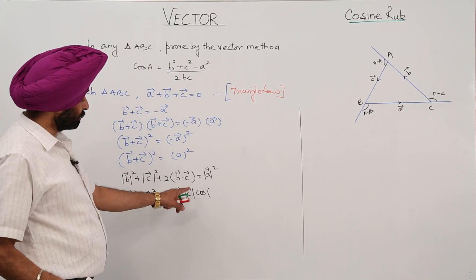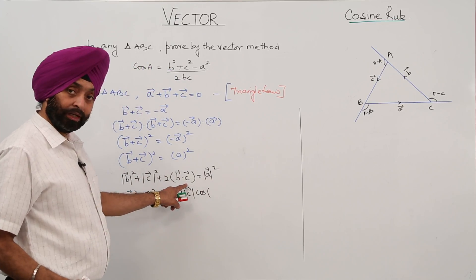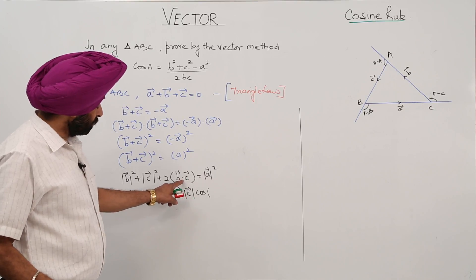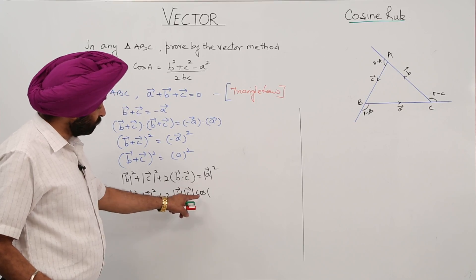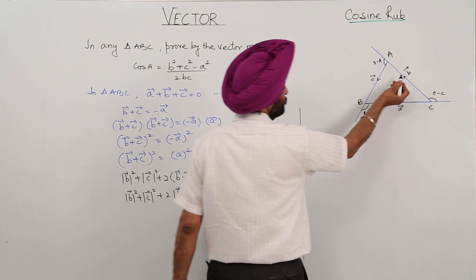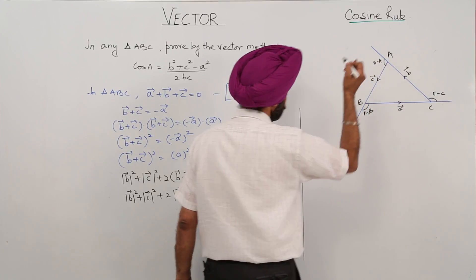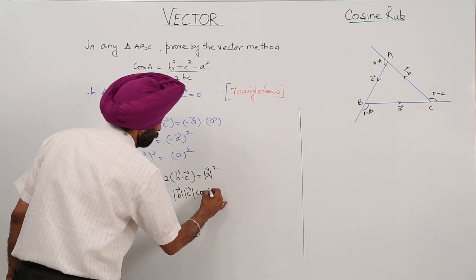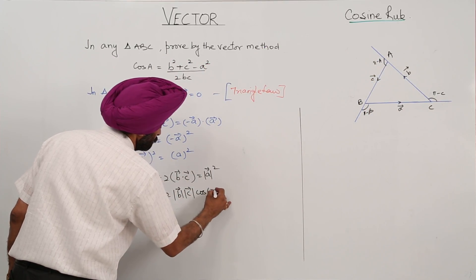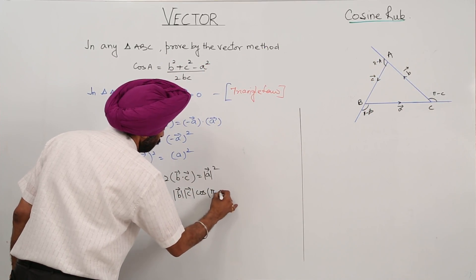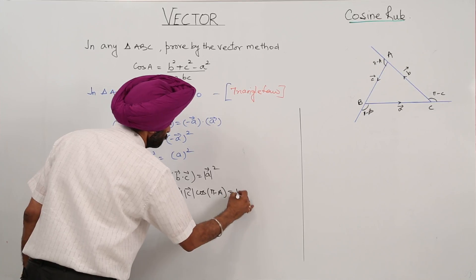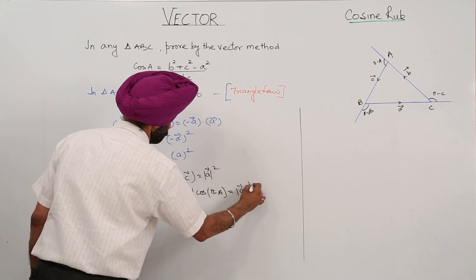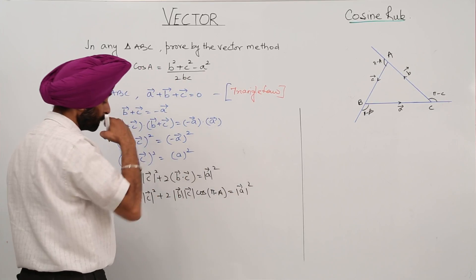Now for the dot product B dot C: B is here and C is here, so the angle between them is pi minus A. We write vector C cos(pi minus A), giving magnitude of A square.